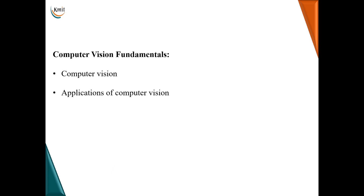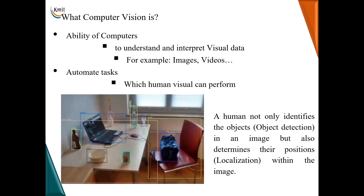Coming to this session — what computer vision actually is? It is defined as the ability of a computer to understand and interpret visual data, specifically images and videos. The other definition of computer vision is the ability of a computer to automatically perform certain tasks which the human vision system can easily perform.